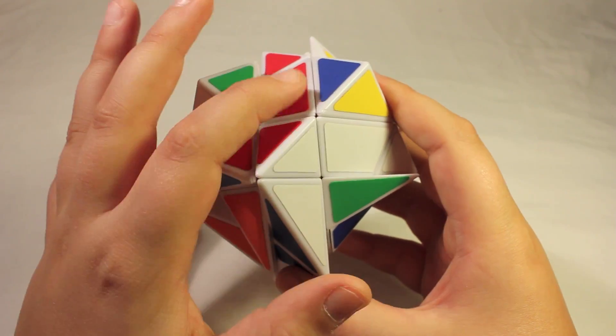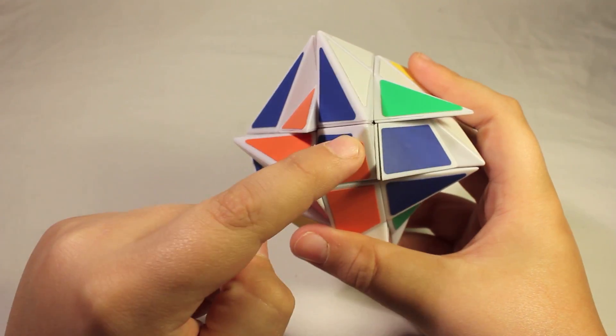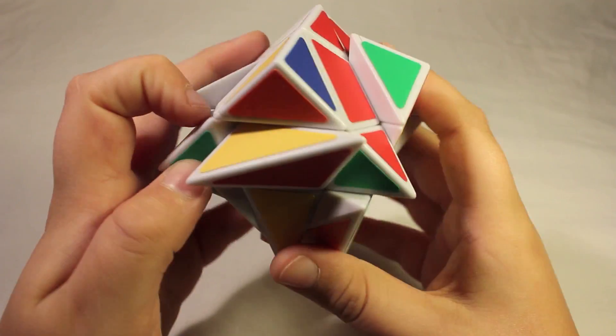Now we have constructed our cross, which is these pieces here. And also we have all of our centers twisted correctly.